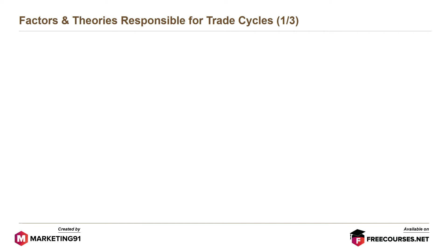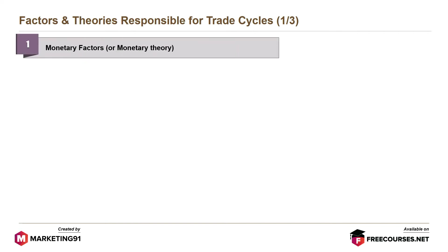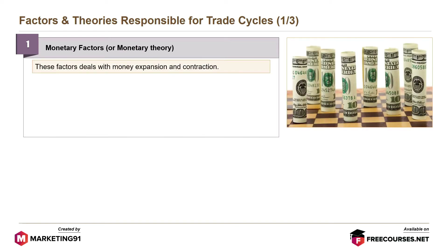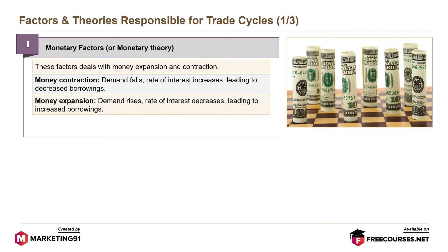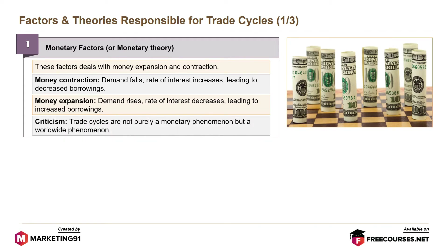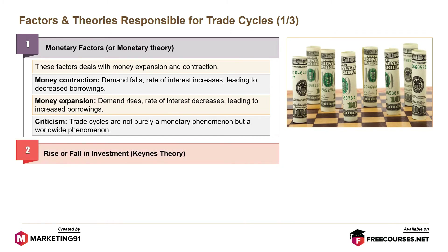Let's understand the factors and theories responsible for trade cycles. The first is monetary factors, or monetary theory. These factors deal with money expansion and contraction. During money contraction, demand falls and the rate of interest increases, leading to decreased borrowings. During money expansion, demand rises and the rate of interest decreases, leading to increased borrowings. Criticism: trade cycles are not purely a monetary phenomenon, but a worldwide phenomenon.